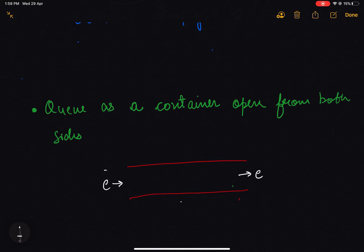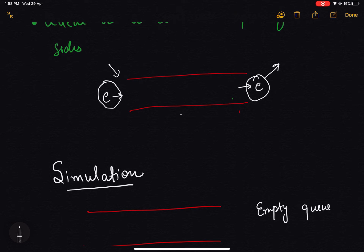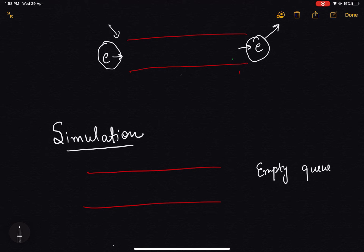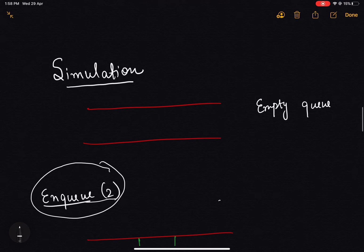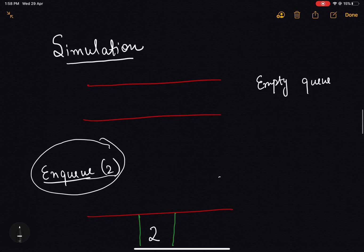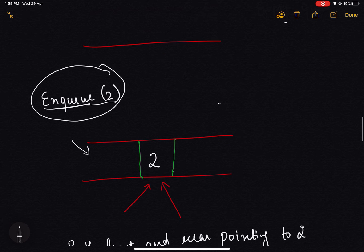Now let's say we have these operations available in the library. Let's try to simulate a queue. In the starting we have an empty queue and we need to insert an element 2 into the queue. We can simply call the enqueue function of that library and insert 2 into our queue. When we insert 2, it will come from here.